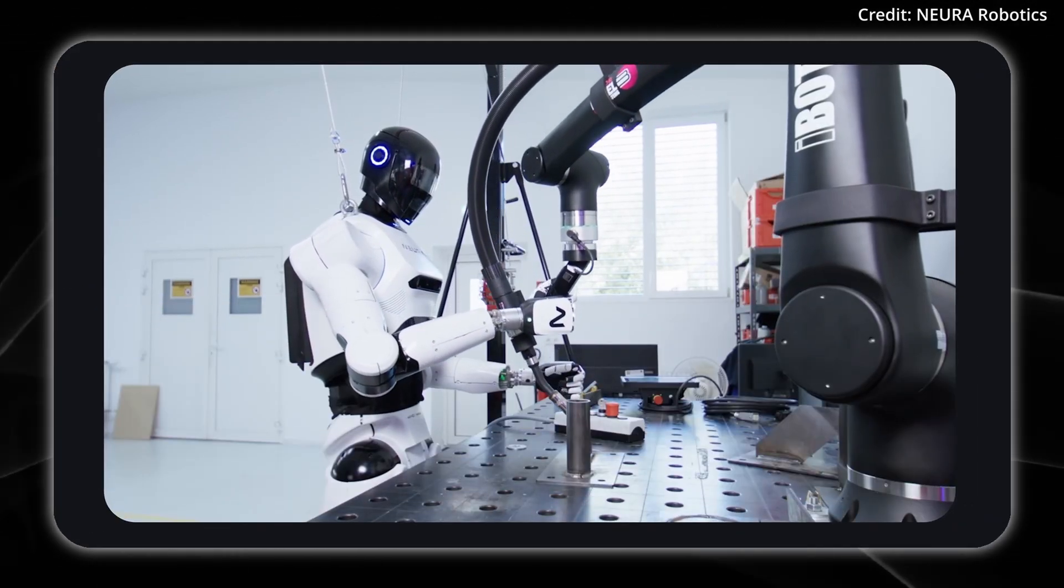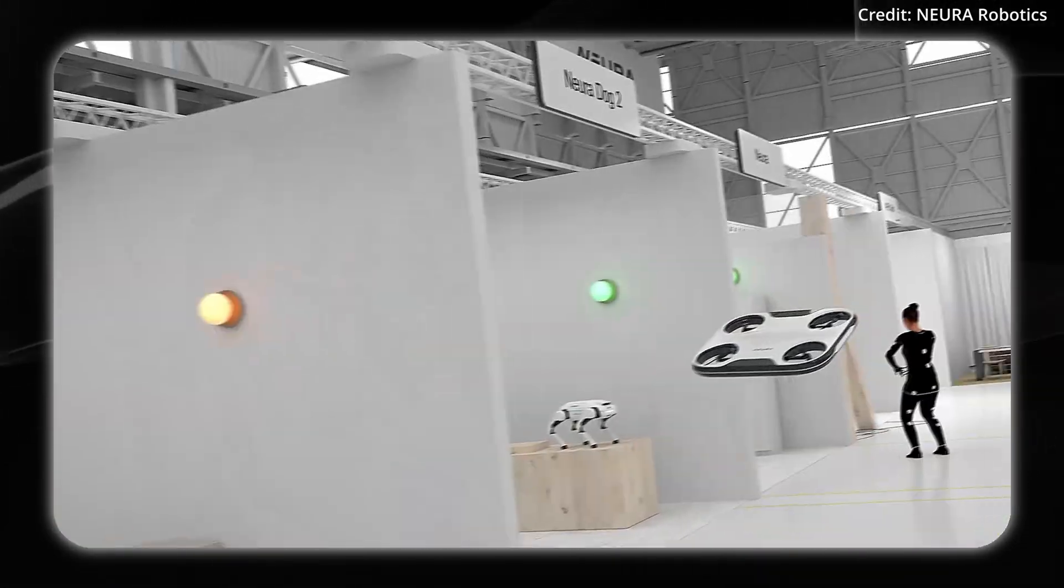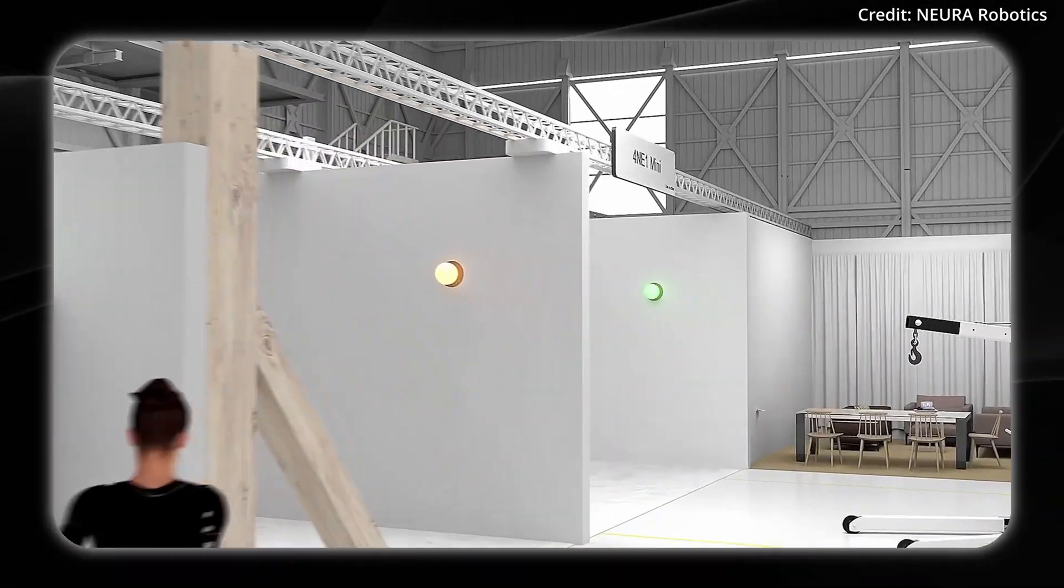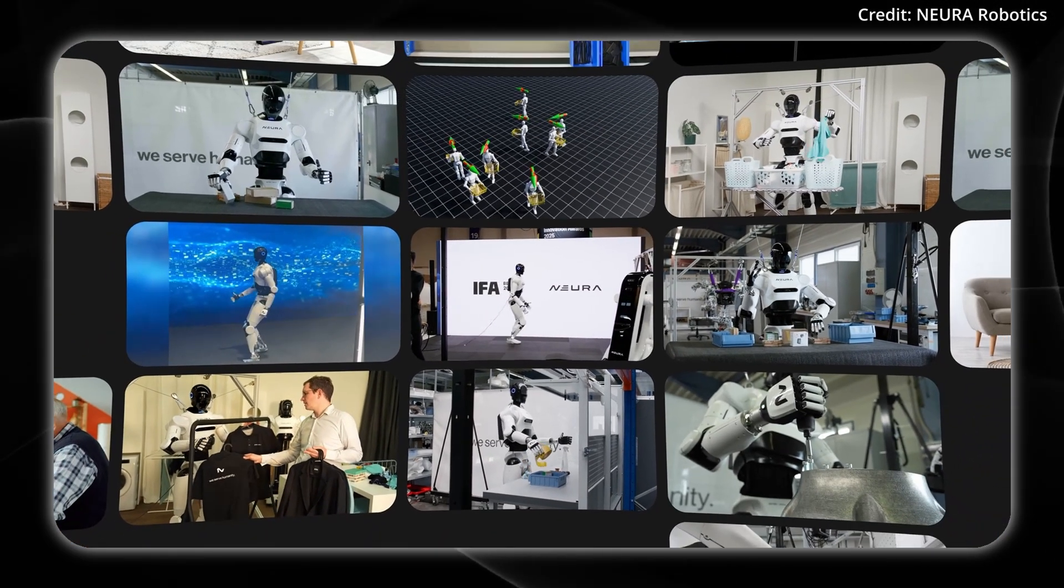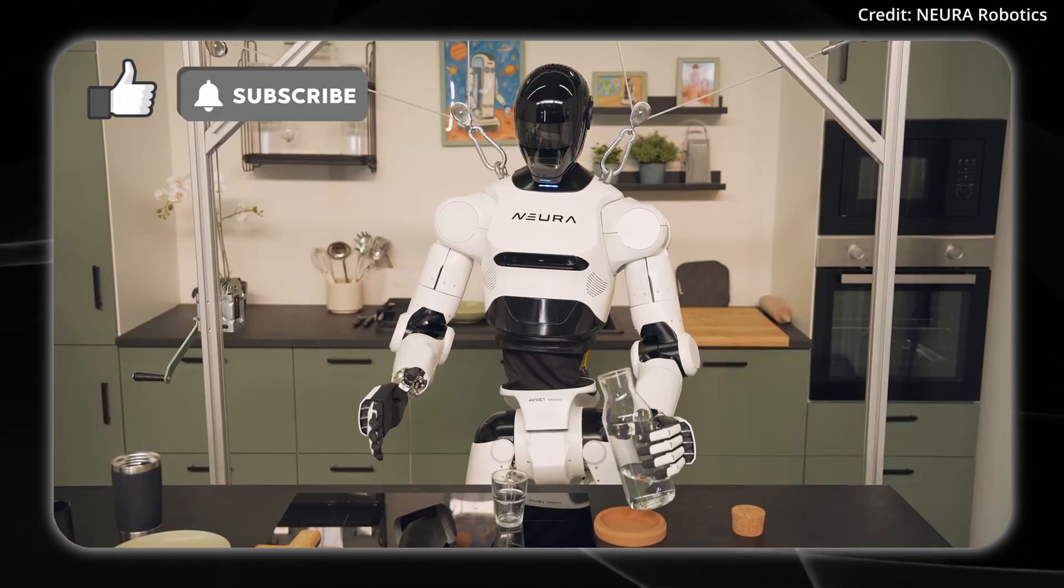And unlike traditional robot training that relies solely on simulation or data sets, Neuro Gym is putting hundreds of robots through real-world tasks like grasping objects, sorting items, and assembling components, all with the goal of building practical intelligence through experience.